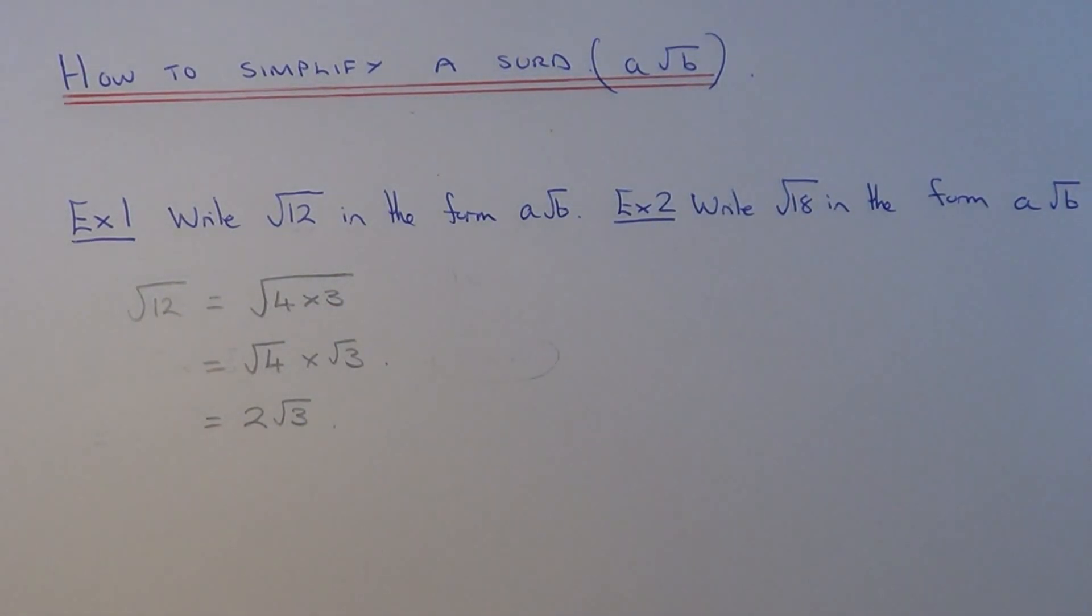So let's have a look at example two. Again, we've got to write root eighteen in the form A root B. We just need to think of a pair of numbers which multiply to give eighteen, and one of the numbers is a square number. So the pair I'm thinking of is nine times two, where nine is the square number.